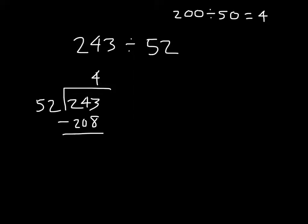And so we have 208 there. Subtracting that, 13 minus 8 is 5, and 3 minus 0 is 3. So our remainder is 35. And we would not be able to divide that any further. We can't make another group of 52. So that should be our answer.